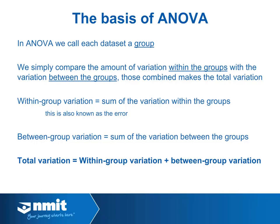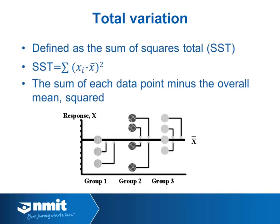The within-group variation is the sum of the variation within each group — we find how much variation there is in group 1, group 2, and group 3, and add them together. This is also known as the error, and the sum of all errors together is called the Sum of Squares Error (SSE). The between-group variation — how much variation there is between groups, not within them — is the Sum of Squares between Groups (SSG). The total variation, referred to as the Sum of Squares Total (SST), equals SSG plus SSE. We get SST by taking each data point, subtracting the overall mean, squaring that value, and summing them all — that's why it's called the sum of squares.